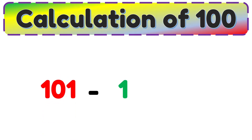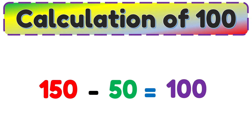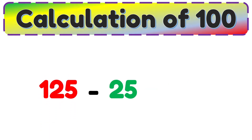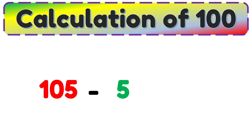101 minus 1 is equal to 100. 150 minus 50 is equal to 100. 125 minus 25 is equal to 100. 105 minus 5 is equal to 100.